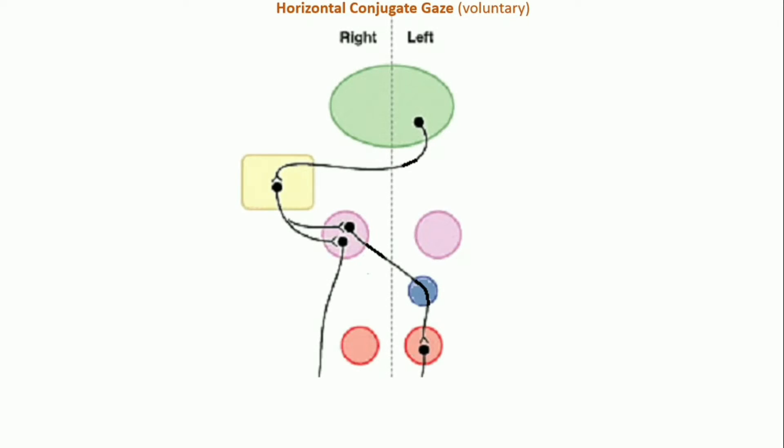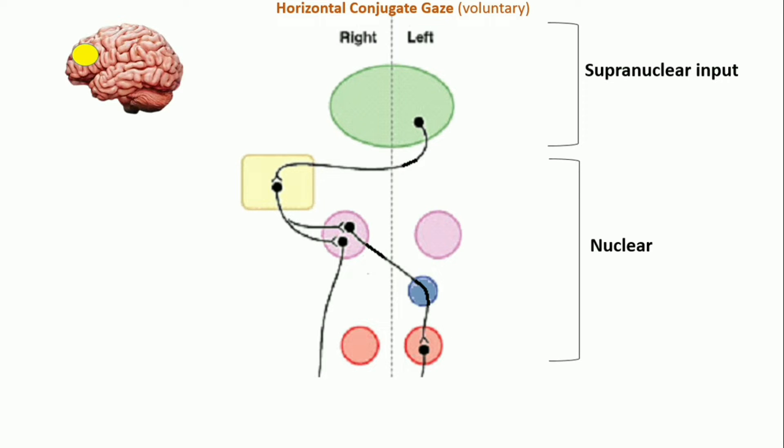Voluntary horizontal gaze is controlled by supranuclear as well as nuclear input. The supranuclear center is located in the frontal lobe, known as the frontal eye field. To look to the right, the contralateral frontal eye field is activated.